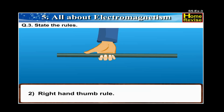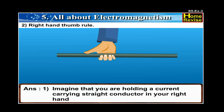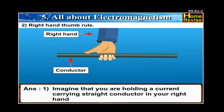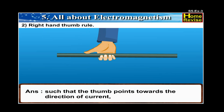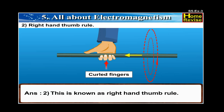2. Right hand thumb rule. Answer: Imagine that you are holding a current-carrying straight conductor in your right hand such that the thumb points towards the direction of current, then the curled fingers around the conductor will give the direction of the magnetic field. This is known as the right hand thumb rule.